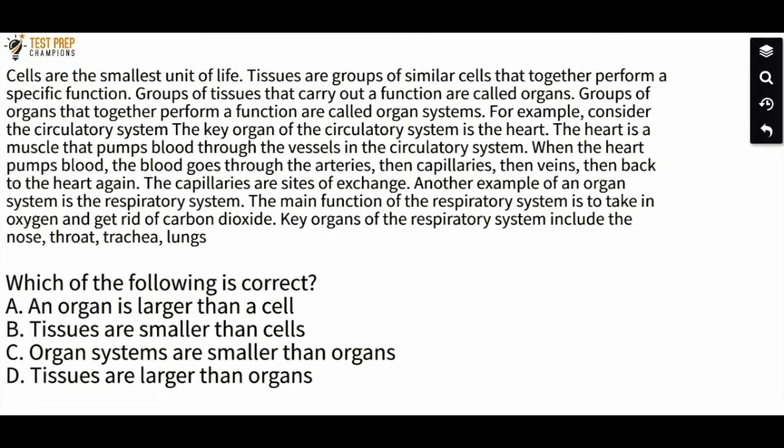Cells are the smallest unit of life. Tissues are groups of similar cells that together perform a specific function. Groups of tissues that carry out a function are called organs. Groups of organs that together perform a function are called organ systems.